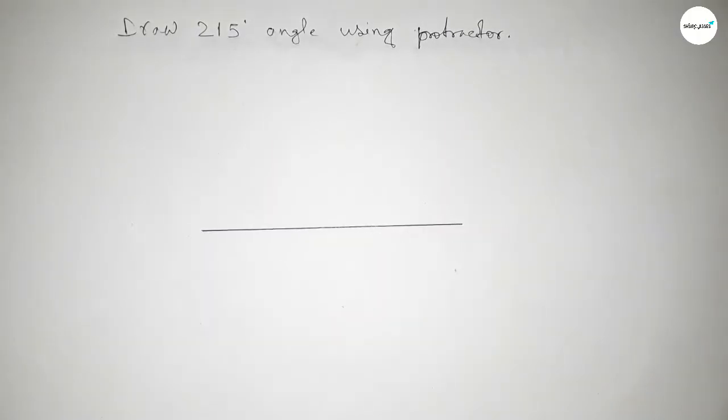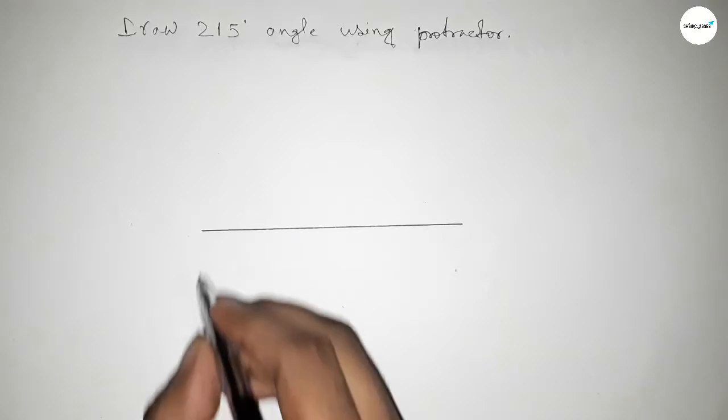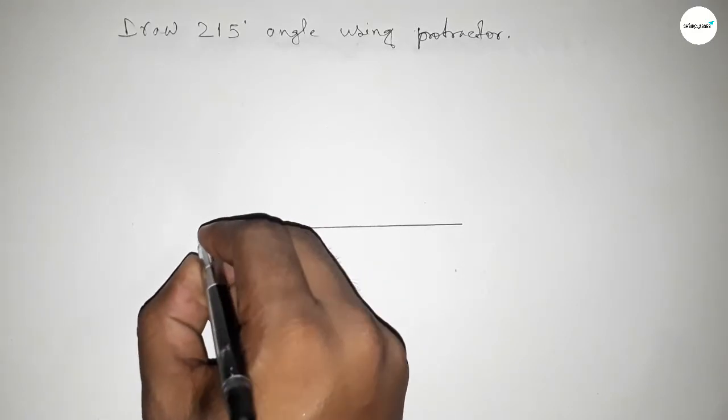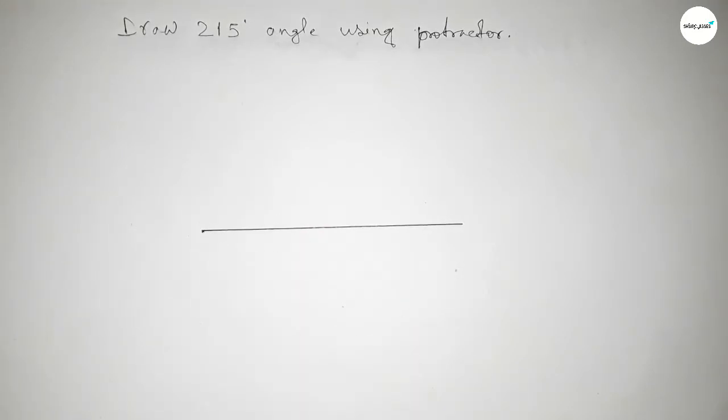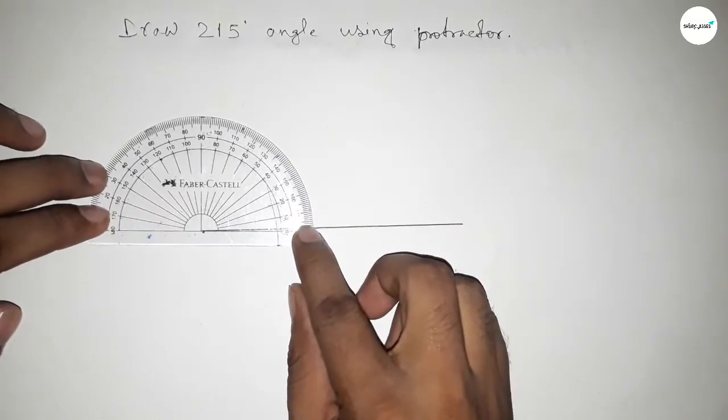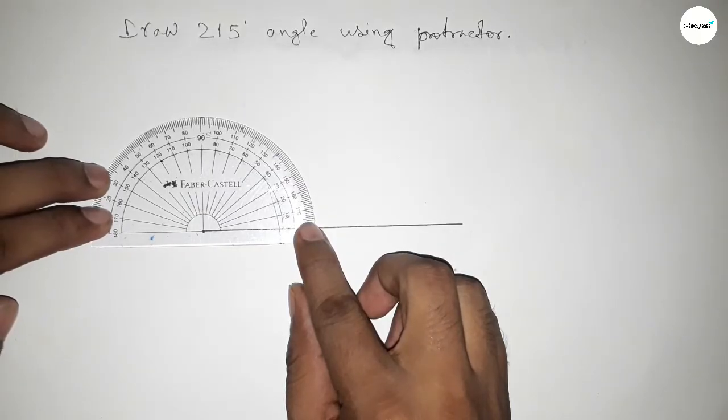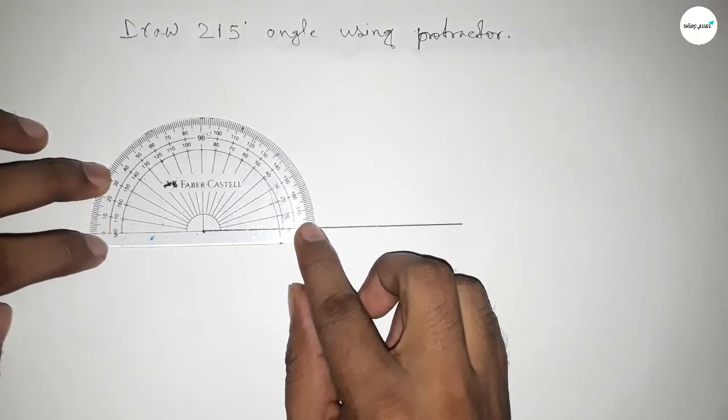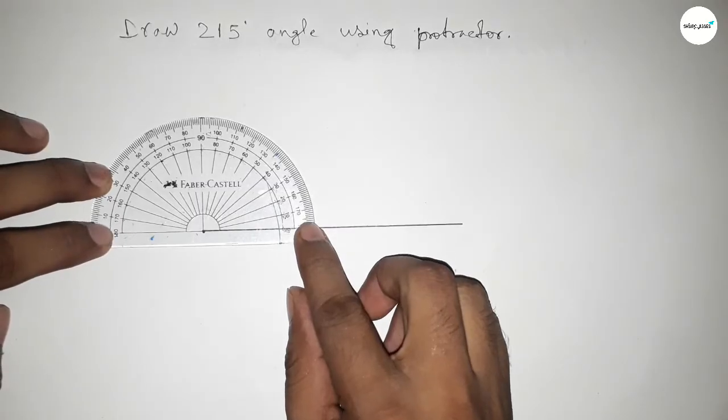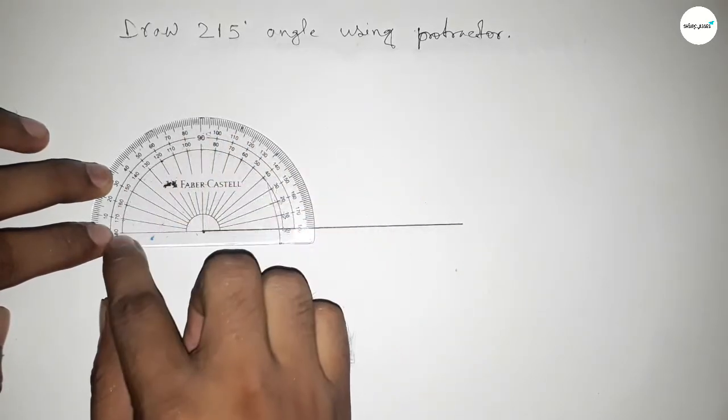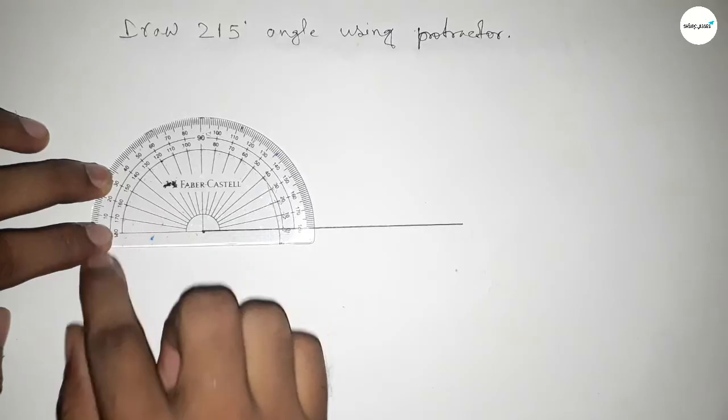Drawing a line here. Next, pointing out here to draw 215 degree on this point. Now putting the protractor on this line perfectly and counting the total angle. This is 180 degree, but we have to draw 215 degree angle.